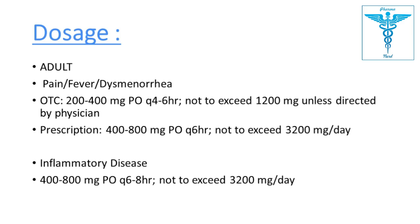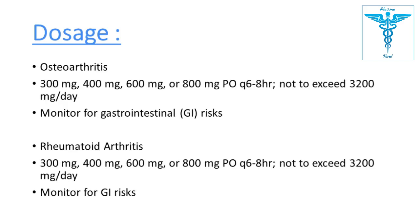For inflammatory diseases: 400 to 800 mg orally every six to eight hours, not exceeding 3200 mg per day. For osteoarthritis: 300, 400, 600, or 800 mg orally every six to eight hours, not exceeding 3200 mg per day. The exact dose depends on the severity of osteoarthritis. GI effects and GI risk must be monitored, as ibuprofen can cause ulcers in the stomach and intestine.